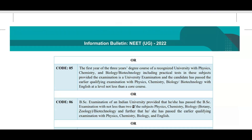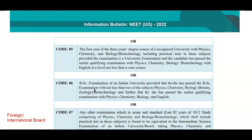Code 5 is for candidates currently studying a degree course like BSc Physics or BSc Chemistry. However, if you are in the first year of BSc, I would recommend going with code 02 since you have already completed 12th. Code 6 is for candidates who have fully completed a BSc — a three-year course — and then want to appear for NEET; they can select code 06.